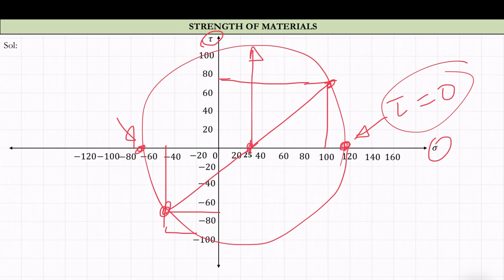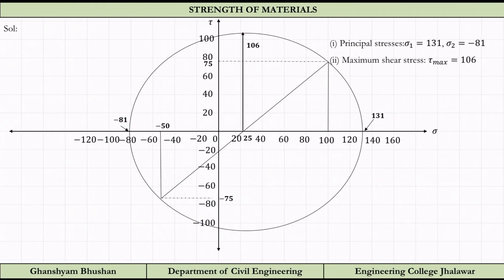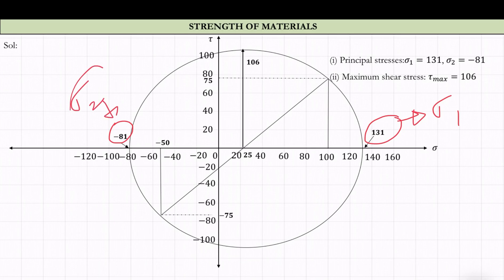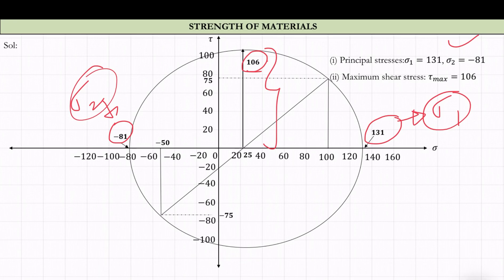The maximum shear stress is this value. If we define the angle theta, this gives the plane of maximum shear stress relative to the sigma_x plane. After plotting the circle, the extreme points on the sigma axis come out as minus 81 and 131. So sigma_1 is 131 MPa and sigma_2 is minus 81 MPa — these are your principal stresses. The maximum shear stress is coming out to be 106 MPa.